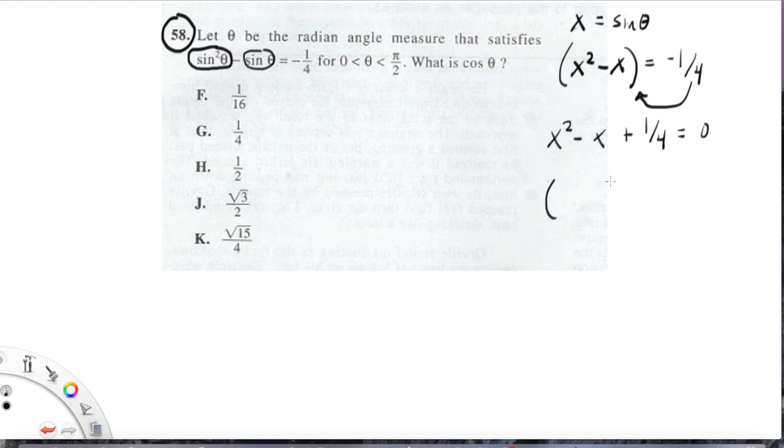Now, we can factor this, x, and we're going to have, let's see, negative in the middle, positive at the end. That means we're going to have two negative numbers. Let's do negative one-half in each case. One-half times one-half, the negatives will cancel out. We'll get positive one-fourth. Negative one-half x and negative one-half x gives us the negative x. So this is true, that we can factor the equation this way.